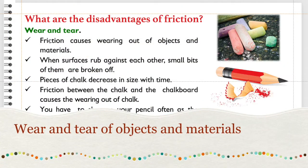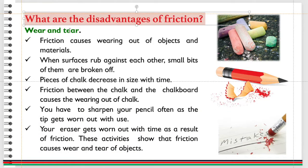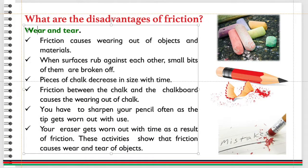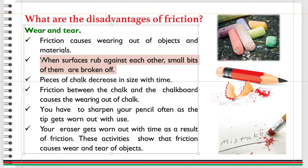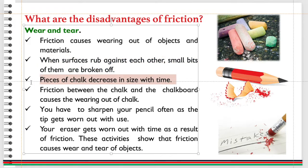What are the disadvantages of friction? Wear and tear: friction causes wearing out of objects and materials. When surfaces rub against each other, small bits of them are broken off. Pieces of chalk decrease in size with time.